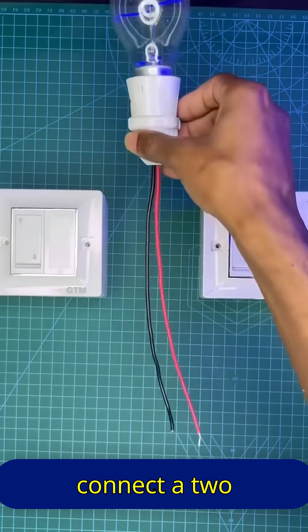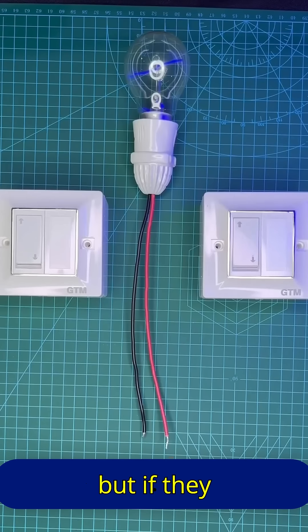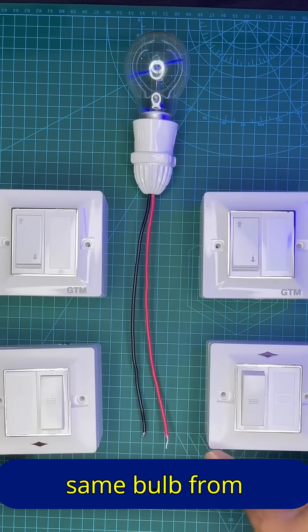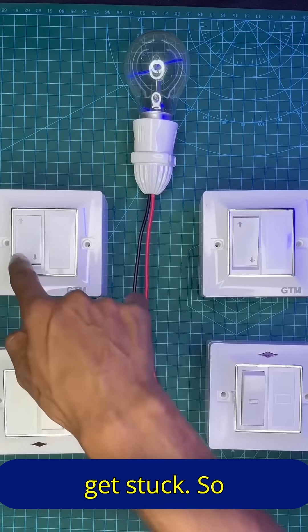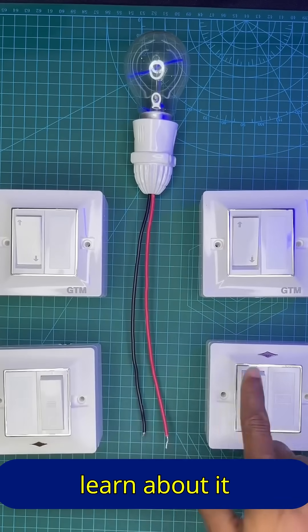Many electricians know how to connect a two-way switch with a bulb, but if they are asked to control the same bulb from four different places, they get stuck. So that this doesn't happen to you, let's learn about it in this video.